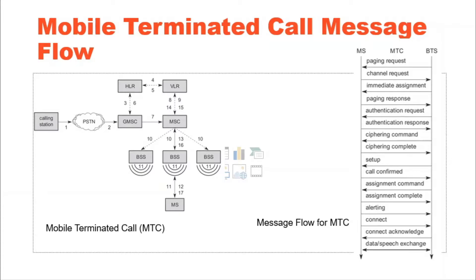Step 3: the GMSC identifies the HLR for the subscriber, which is coded in the phone number, and signals the call setup to the HLR.